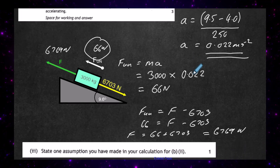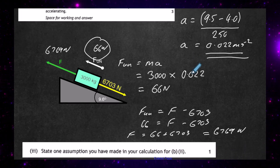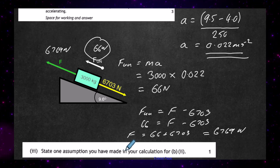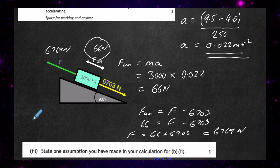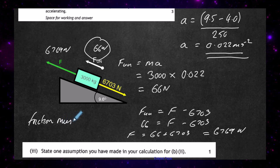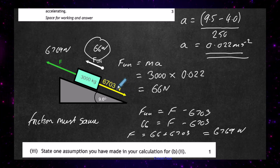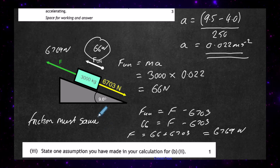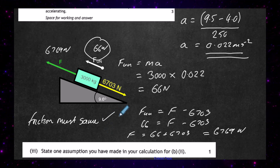The last part asks us to state one assumption made in the calculation for Part B2. The assumption is that the frictional forces have remained the same. The component of weight acting down the slope also stays the same, and we must presume the friction force — which we were told is 1,800 newtons — remains constant. That's why we're allowed to use the combined downward force of 6,703 newtons.